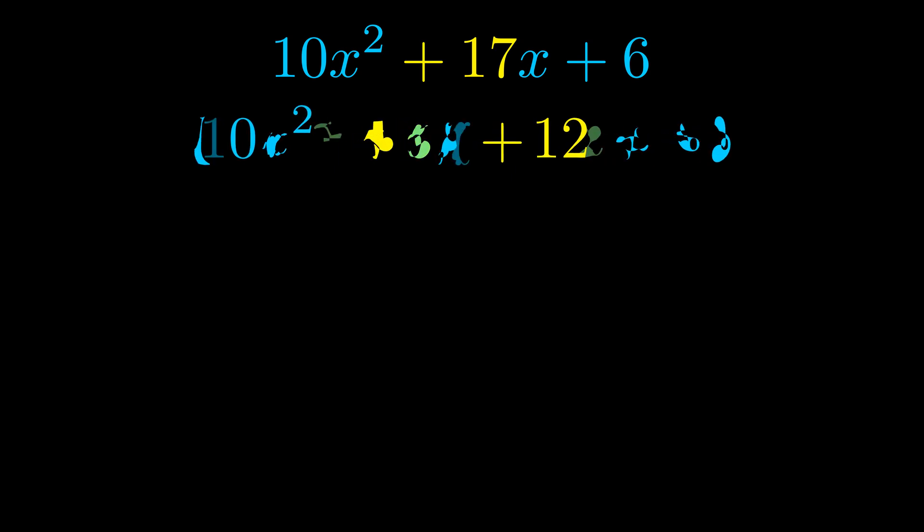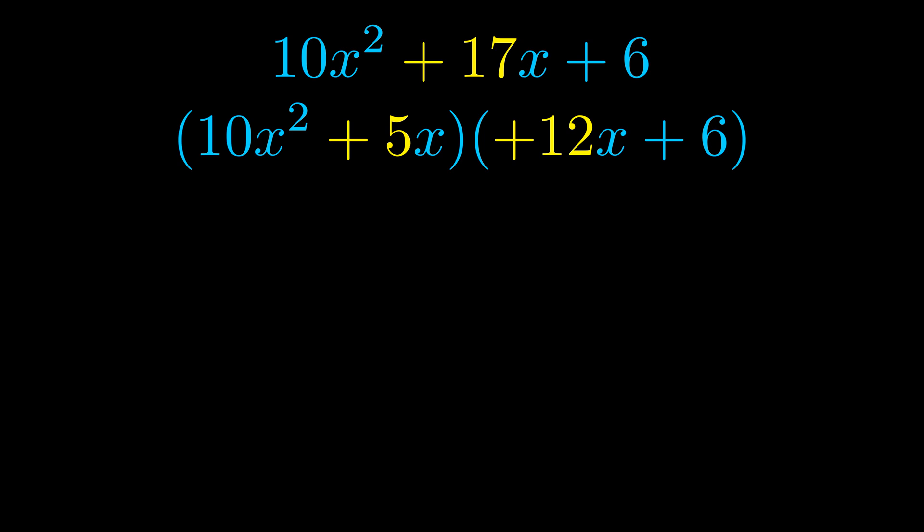Once we've done this we go ahead and we put parentheses around the first term and the last term. And we do that so that we can take the greatest common factor out of both terms. We can see the greatest common factor is now outside in green.